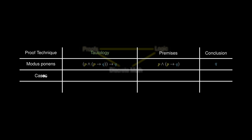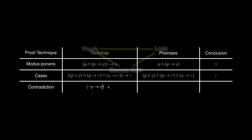For a proof by cases, we need the following premises: at least one of P or Q must hold, P must imply R, and Q must imply R. If these three premises hold, we can necessarily conclude that R must be true. For the proof by contradiction, if we can show that P being false leads to a contradiction, we can automatically conclude that P must be true.